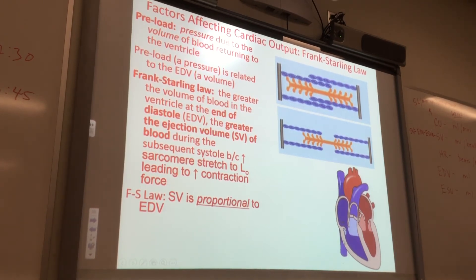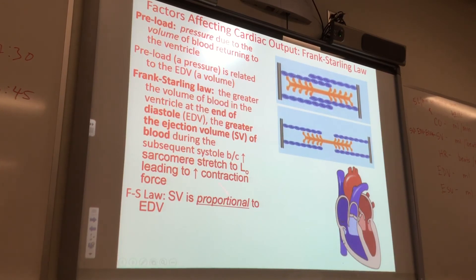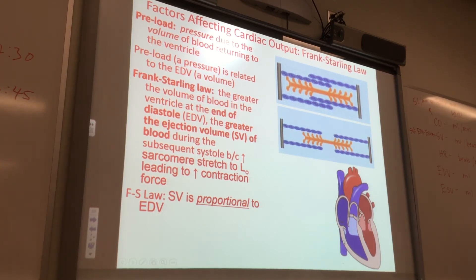Frank-Starling Law says stroke volume is proportional to end-diastolic volume — so as you get more and more blood in your heart at the end of diastole, you're going to eject more blood when you do a stroke volume.